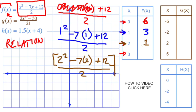And last but not least, what if x is 3? We'll have 3 squared, that's 9 minus 7 times 3, that's negative 21 plus 9 is negative 12 plus 12, is 0 divided by 2. We have 0 here.